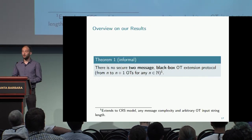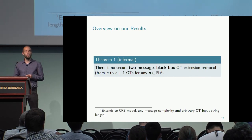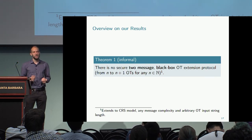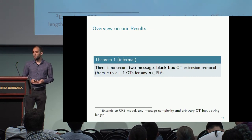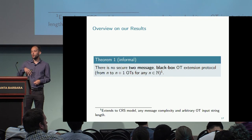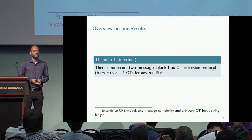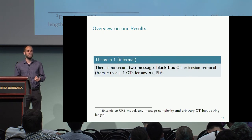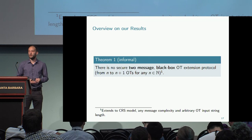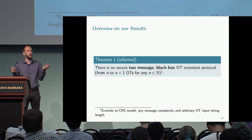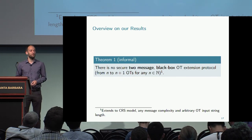Our main result is a very strong impossibility theorem: there is no secure two-message blackbox OT extension. This holds in a strong sense — the entropy argument over the receiver's input applies for arbitrary string lengths, so even extending to N+1 OTs of a single-bit string is impossible. The result also holds in the common reference string model and for all round complexities: starting with a K-round OT, you cannot have a K-round OT extension or use a fixed number of public key operations to produce an arbitrarily larger number of oblivious transfers. Thank you for your attention.